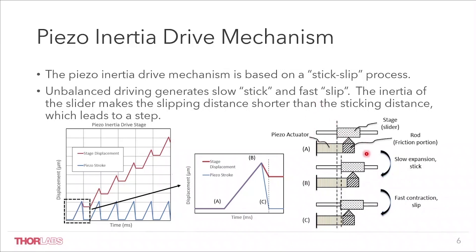The sketch map of a piezo-inertial drive stage shows the stage simply consisting of a piezo actuator fixed to a solid wall. The rod has a friction portion and slides on a rail.